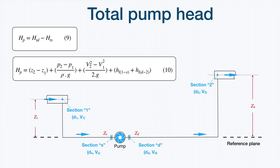The energy the pump must add to the system covers the difference in geodetic head between points 2 and 1, the difference in pressure energy between points 2 and 1, the difference in kinetic energy between sections 2 and 1, and the pressure losses between sections 1 and 2. This is the pump head the pump must add to cover the energy needs of the system. In the next lesson, we will recall how to determine pressure losses for straight pipes, accessories, and valves. Goodbye!